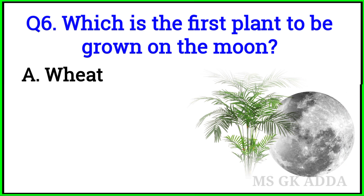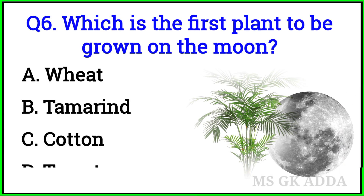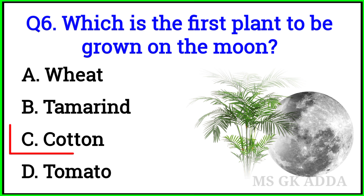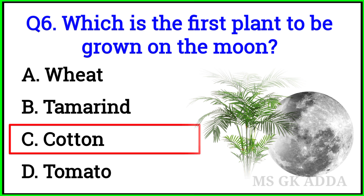Question 6: Which is the first plant to be grown on the moon? Option C — Cotton.